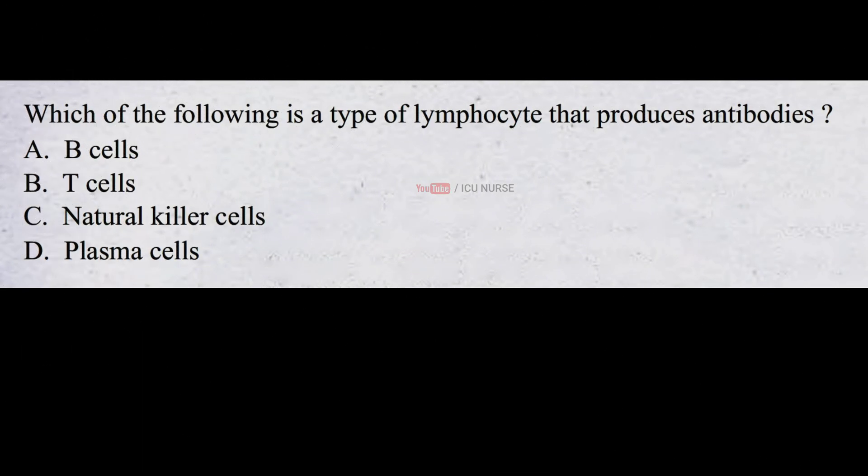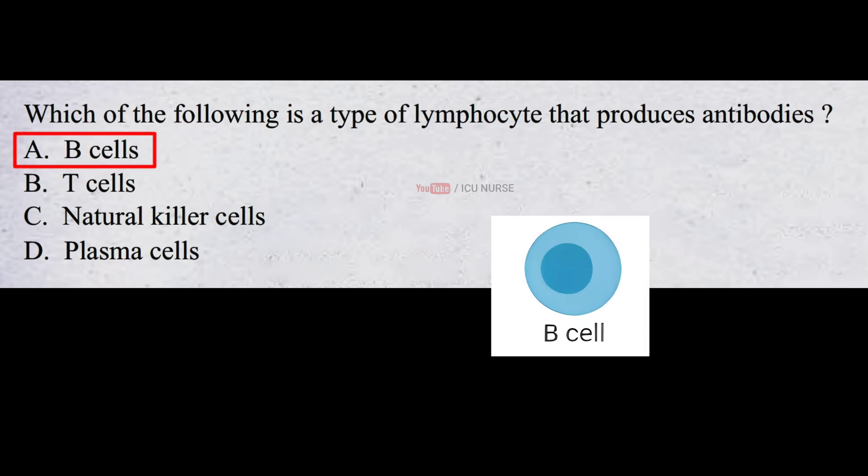Which of the following is a type of lymphocyte that produces antibodies? A. B cells B. T cells C. Natural killer cells D. Plasma cells. The correct answer is A. B cells. B cells are a type of lymphocyte that produces antibodies.